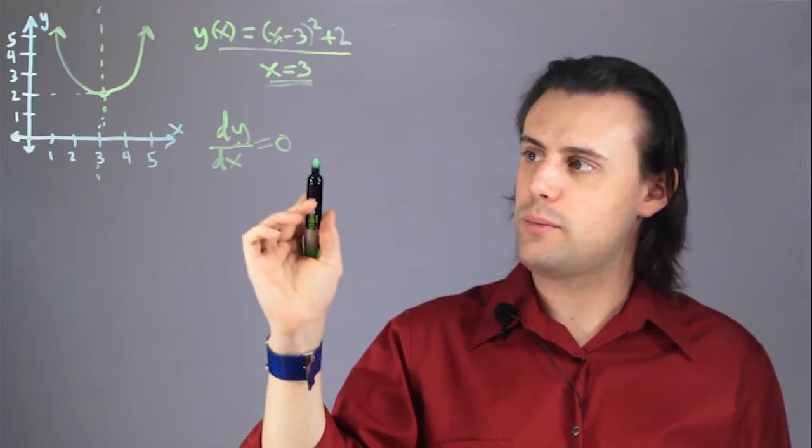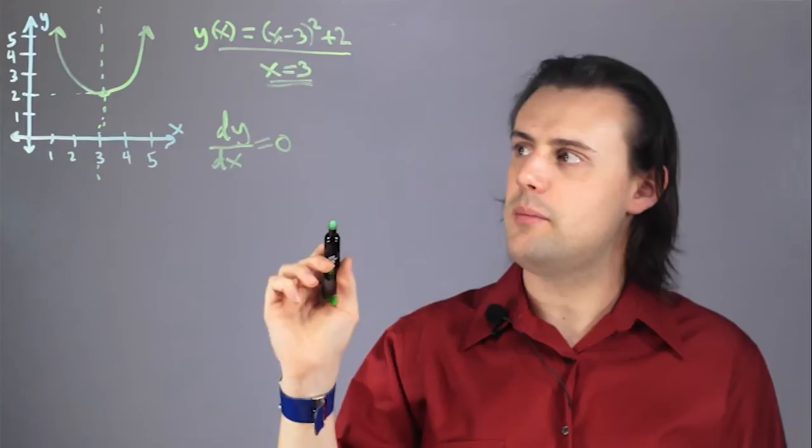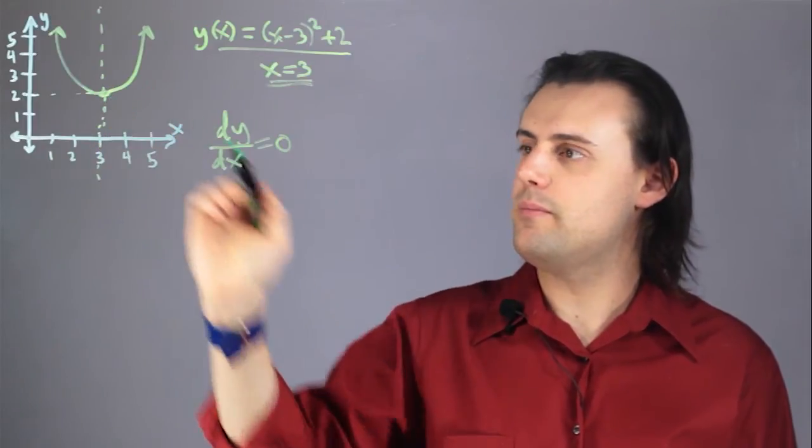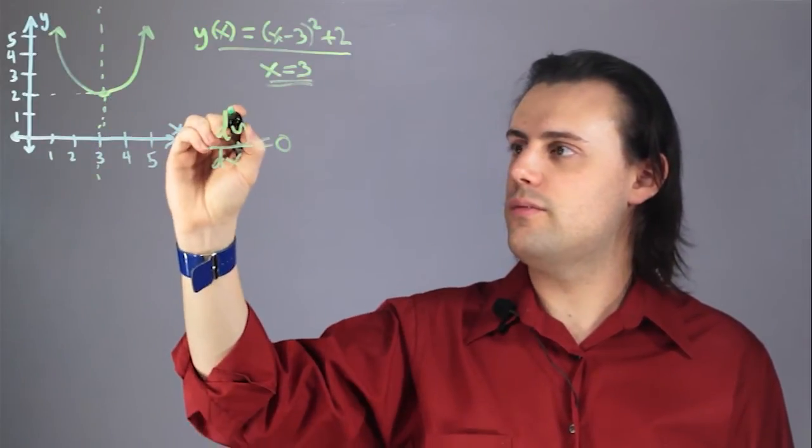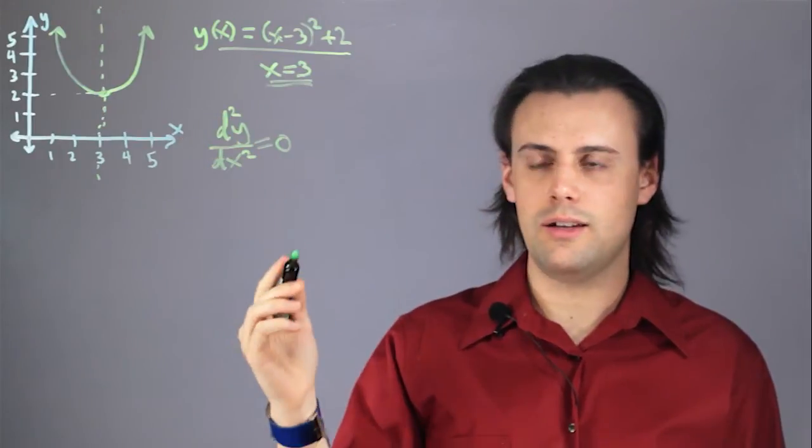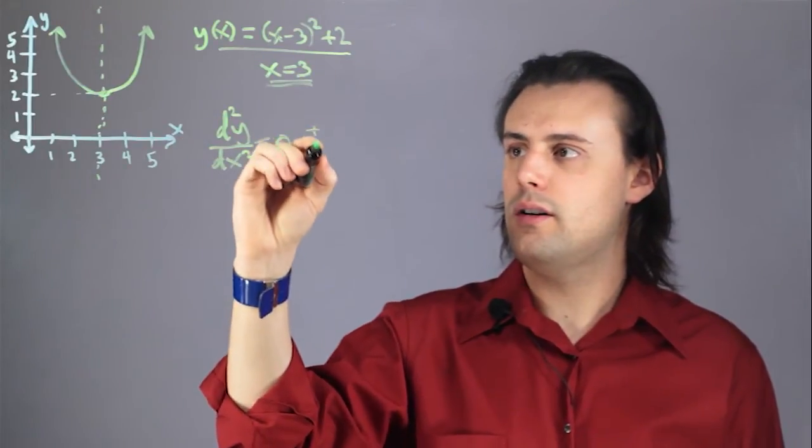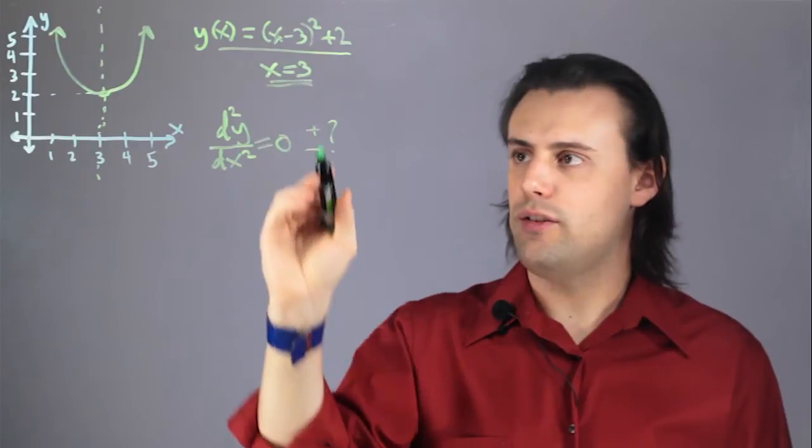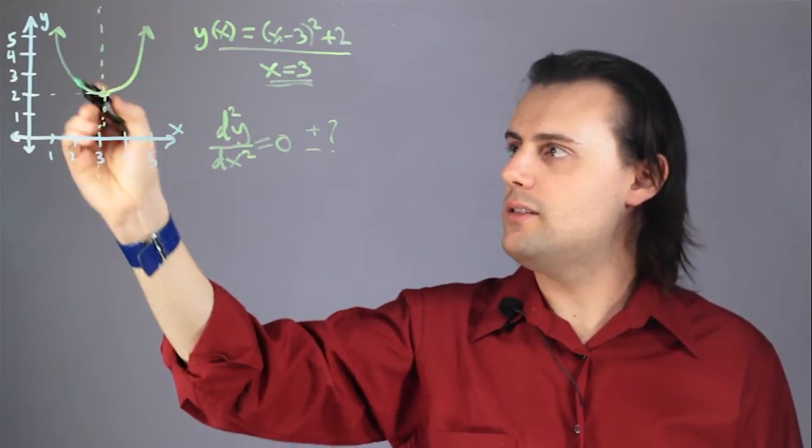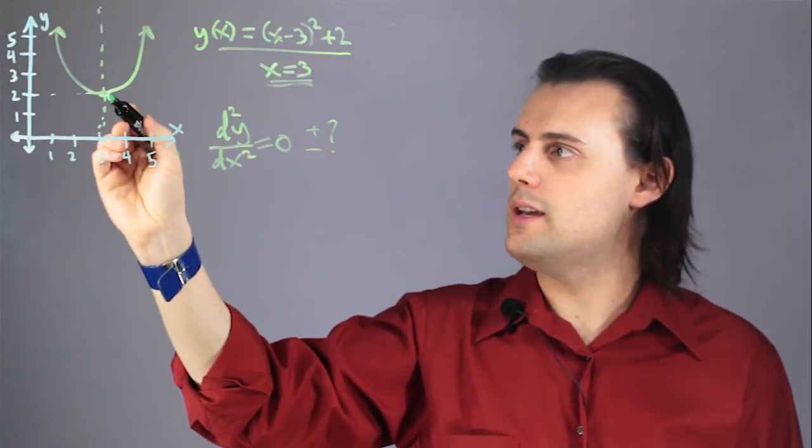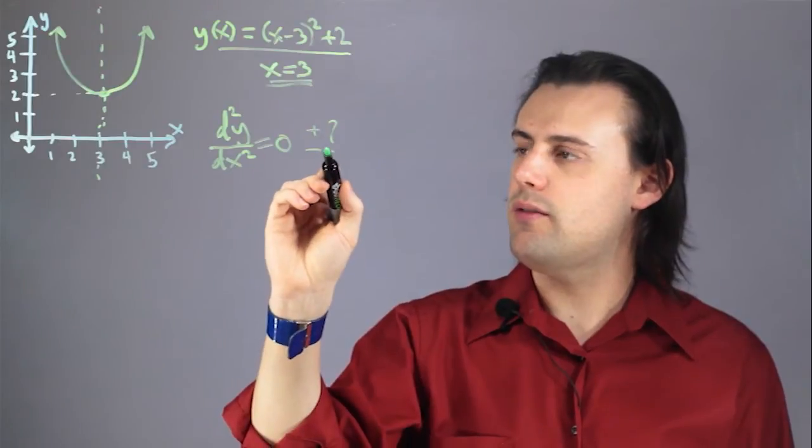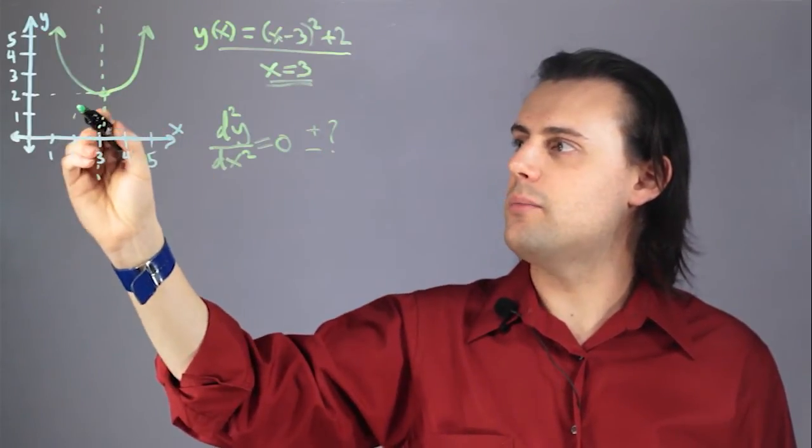To determine whether it's a maxima or a minima, in this case it was a minima, you can take the second derivative and see whether it's positive or negative. If it's positive, that means it's going to be a minima. If the second derivative is negative, that means it's a maxima.